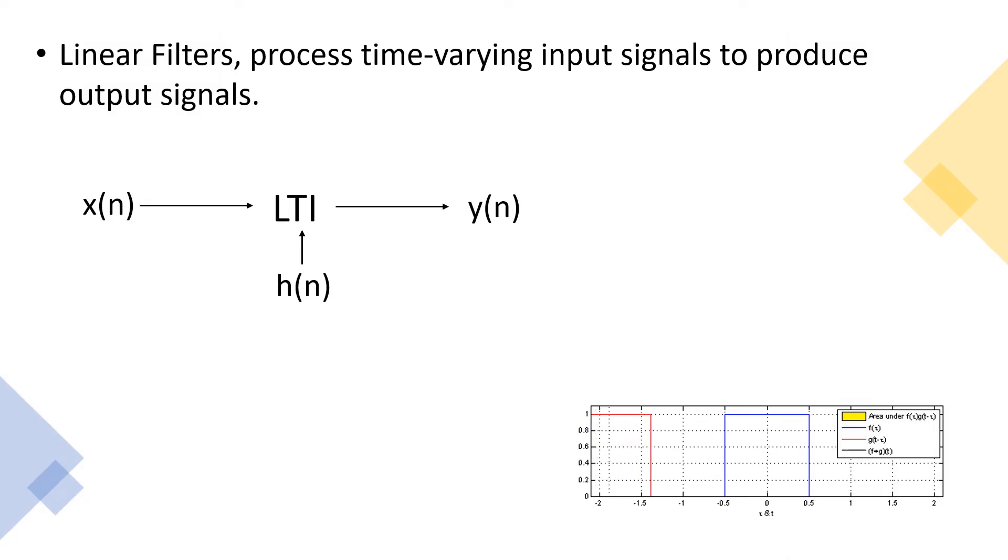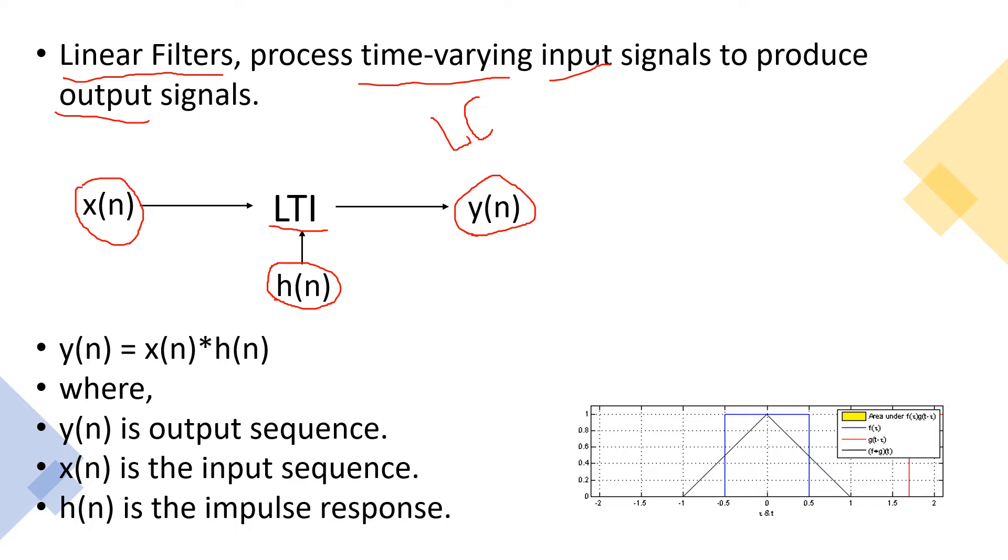To understand this concept, we need to know what linear filters do. Linear filters process time-varying input signals or sequences to produce output signals or sequences. When we have an input signal x and impulse response h given to a linear time invariant system, we get output sequence y. Basically, linear filters perform linear convolution operation. It is mathematically given as y equal to x convolution h, where y is the output sequence, x is the input sequence, and h is the impulse response.